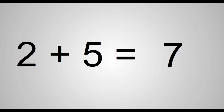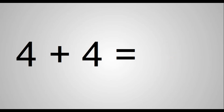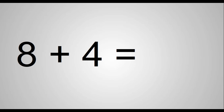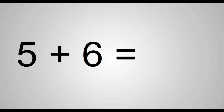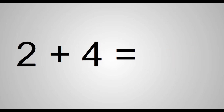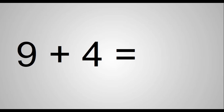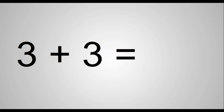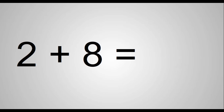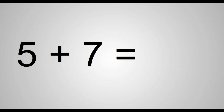Four plus four equals eight. Eight plus four equals twelve. Five plus six equals eleven. Two plus four equals six. Nine plus four equals thirteen. Three plus three equals six. Two plus eight equals ten. Five plus seven equals twelve.